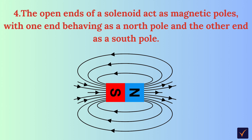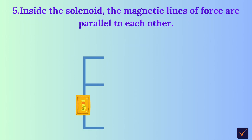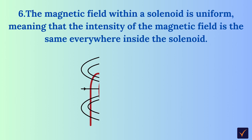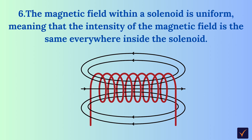One end of the solenoid is the north pole and the remaining end is the south pole. Inside the solenoid, the magnetic lines of force are parallel to each other and do not intersect. Because the magnetic field within a solenoid is uniform, the intensity of the magnetic field is the same everywhere inside the solenoid.